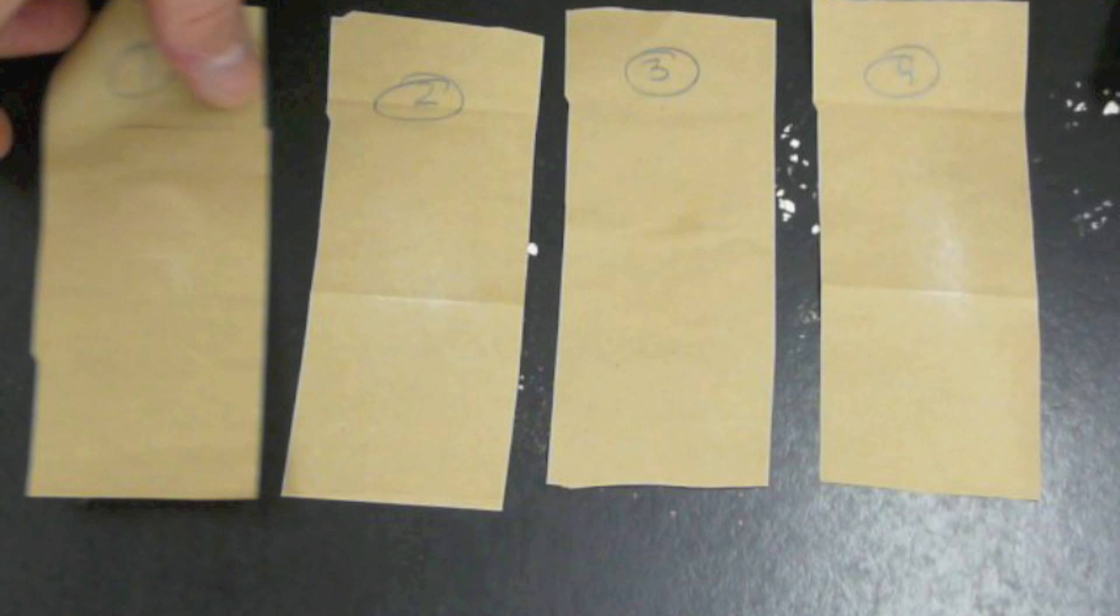Now we're going to flip each bag over to see if there's a stain. As we flip them over, make your observation, decide on your test results, and then we'll look at our other four foods.